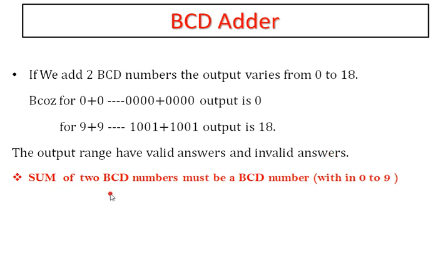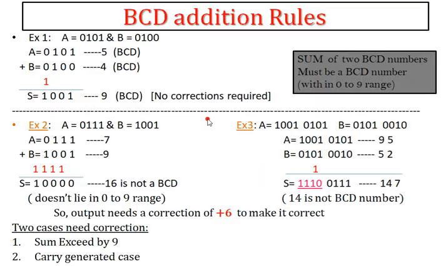The sum of two BCD numbers must be a BCD number. For example, 0 plus 0 gives 0, which is a valid BCD answer. But 9 plus 9 gives 18, which is not a BCD number — that is an invalid answer. I will explain these two cases with some examples.